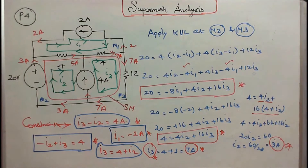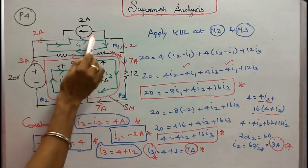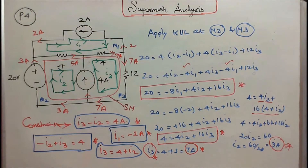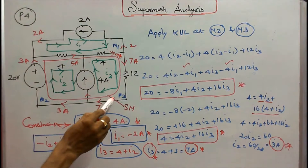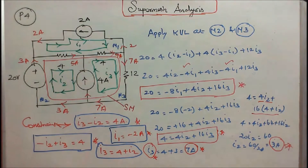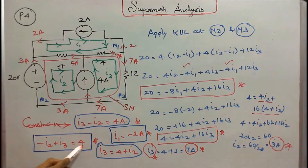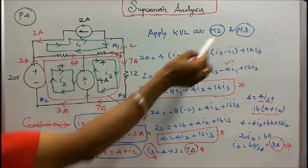Problem number 4: three resistors — 4 ohm, 4 ohm, 12 ohm — two current sources of 4 amps and 2 amps, and one voltage source of 20 volts, connected as shown in the figure. The question is: find mesh currents I1, I2, I3 with clockwise direction in meshes M1, M2, M3. The 4 amp current source is connected between M2 and M3, so I consider this a super mesh. The constraint is I3 minus I2 equals 4, or I3 equals 4 plus I2. Here I1 is equal to minus 2 amps.